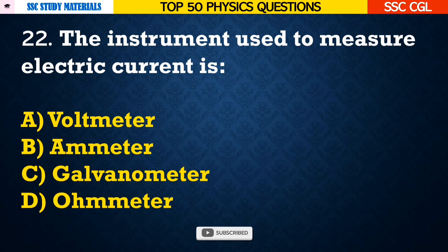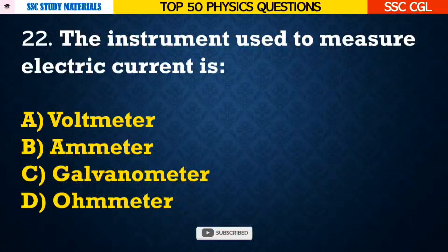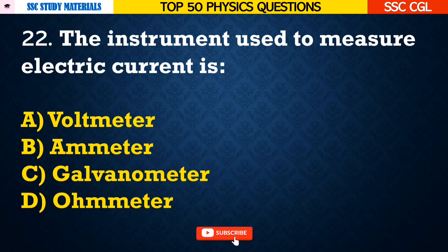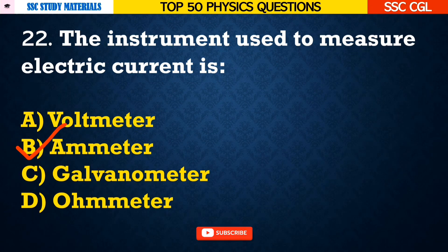Question number 22: The instrument used to measure electric current is — Answer B. Ammeter.